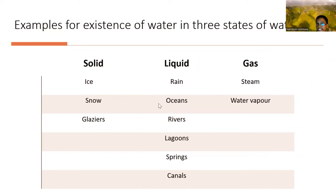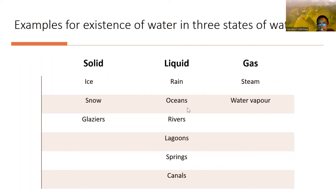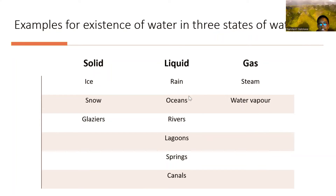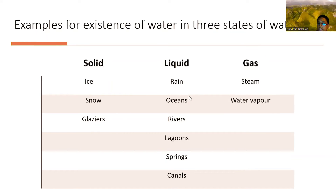Examples of the existence of water in three states: Solid state — ice, snow, and glaciers. Liquid state — rain, oceans, rivers, lagoons, springs, and canals. Gas state — steam and water vapor.